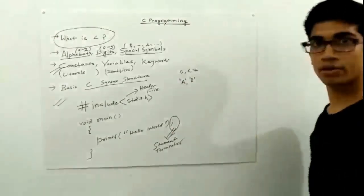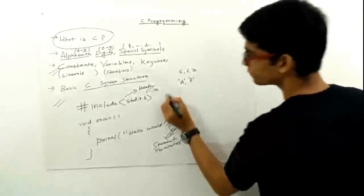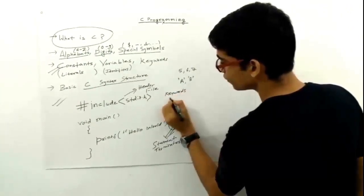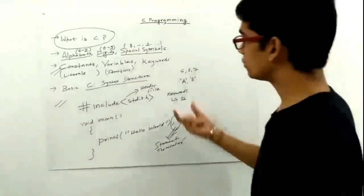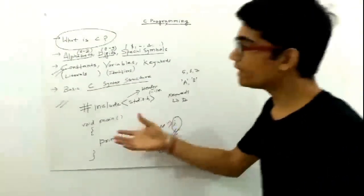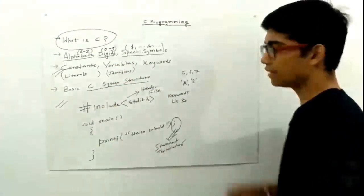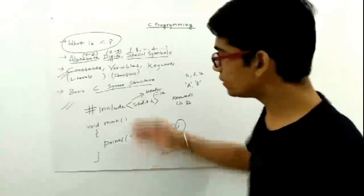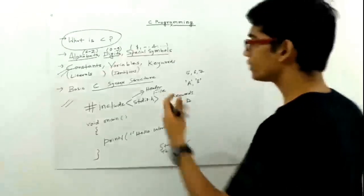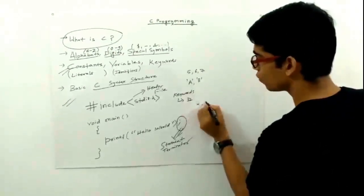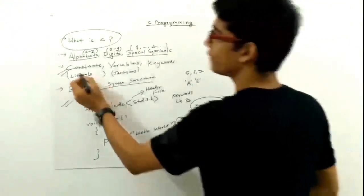Now keywords. We have 32 keywords in C. These are keywords which have a special meaning in C. And variables—variables are those things in which we can assign some value. So in the due course of programming, that value will be changed accordingly. For example, x, y, z—these will be the variables.